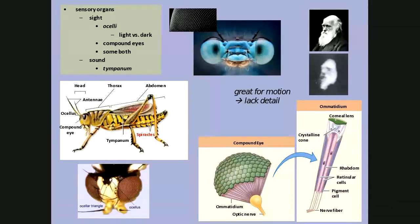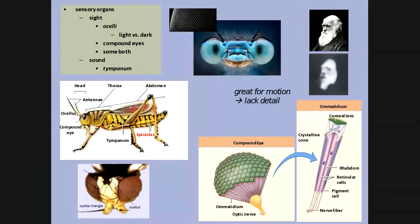Arthropods can also sense sound. On the grasshopper, spiracles are little holes along either side. A modified spiracle — slightly larger — becomes a tympanum, a membrane stretched over the hole like a drum head that senses sound. The spiracles are part of the respiratory system and are one reason terrestrial arthropods were so successful on land. Marine arthropods have gills — like the horseshoe crab, whose book gills look like pages of a book. Terrestrial arthropods use a system called trachea.